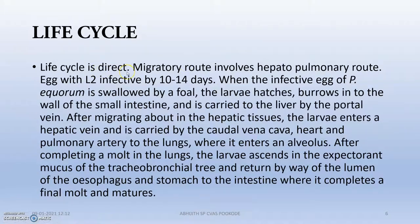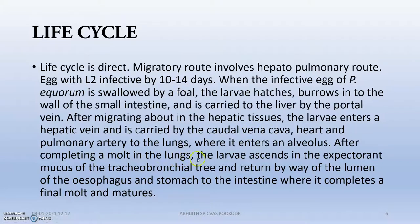The life cycle is direct — there is no intermediate host. The migratory route involves the hepatopulmonary route, which is a very big problem in foals because this can produce verminous pneumonia. Eggs with L2 infective larvae are the infective stage. After completing the moult in the lungs, the larvae ascend into the expectorated mucus of the trachea and bronchial tree, then return via the lumen of the esophagus and stomach.